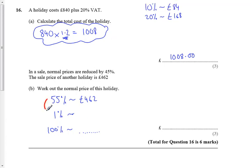So, how am I going to do that? Well, from here I'm going to divide by 55 which I can do on my calculator. It gets me to 1% and then I can scale it back up by times it by 100 to get to my original amount.